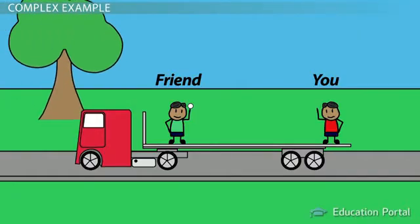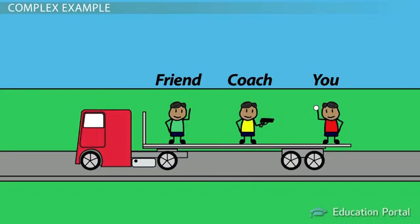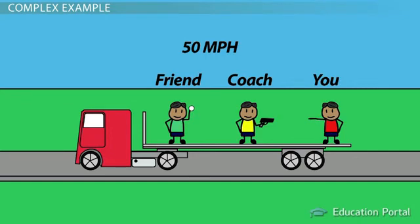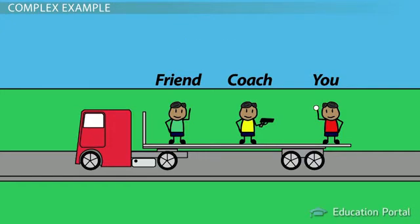Let's look at a bit more complex situation. Imagine playing catch with your best friend on the back of a truck traveling at 65 miles per hour down that same straight stretch of highway. Bring your coach along and have him measure the velocity of the ball using a radar gun. As you play catch, your coach clocks you throwing the ball at 50 miles per hour. Your coach then clocks your friend throwing the ball at 40 miles per hour. What do these speeds mean in terms of relativity?